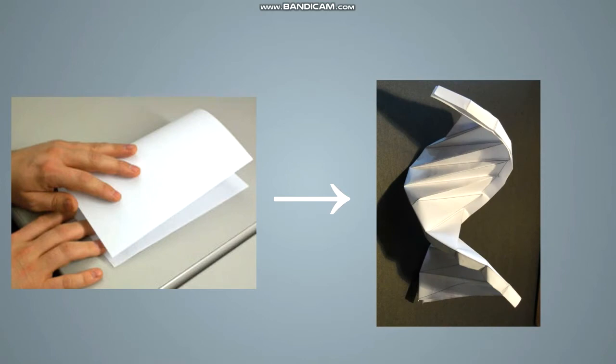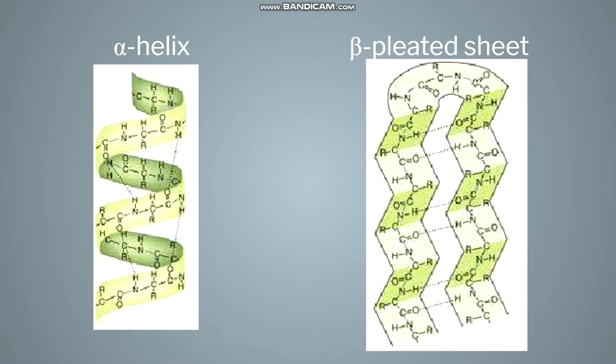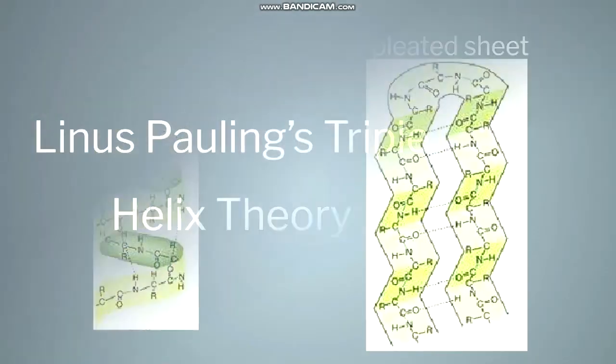After numerous hours of folding, he finally achieved a spiral configuration that satisfied all bond angle specifications. From his model, he concluded that the secondary structure of proteins is helical. This is now known as the alpha helix, as it is one of two protein secondary structures alongside beta-pleated sheets.